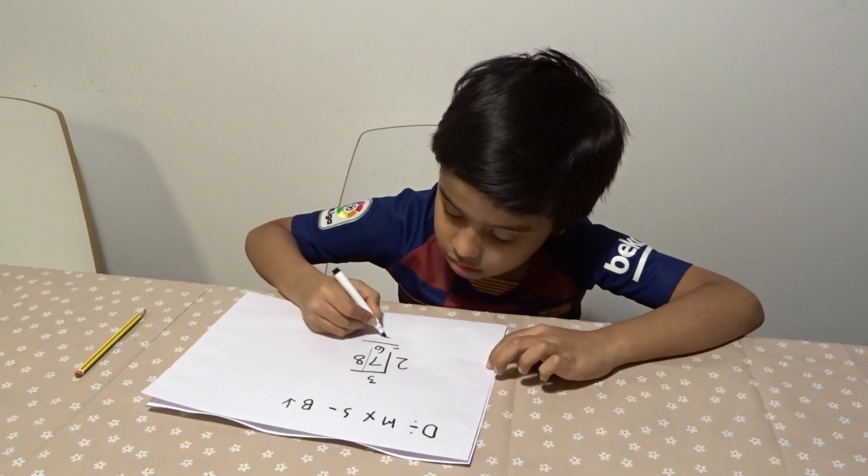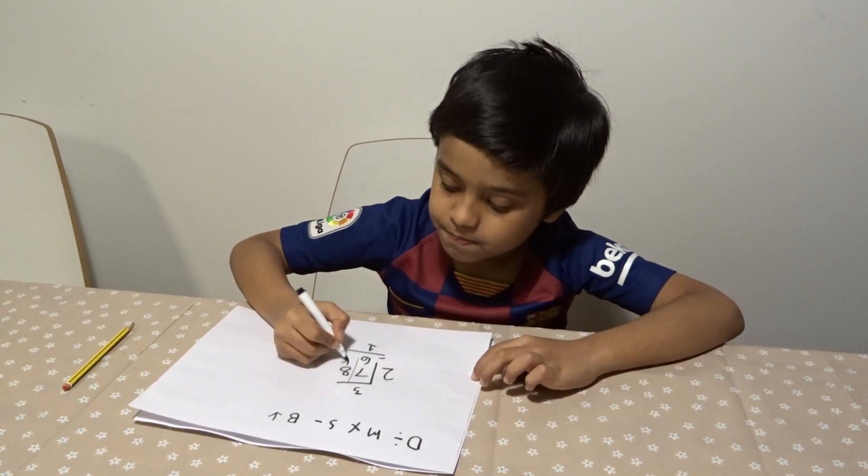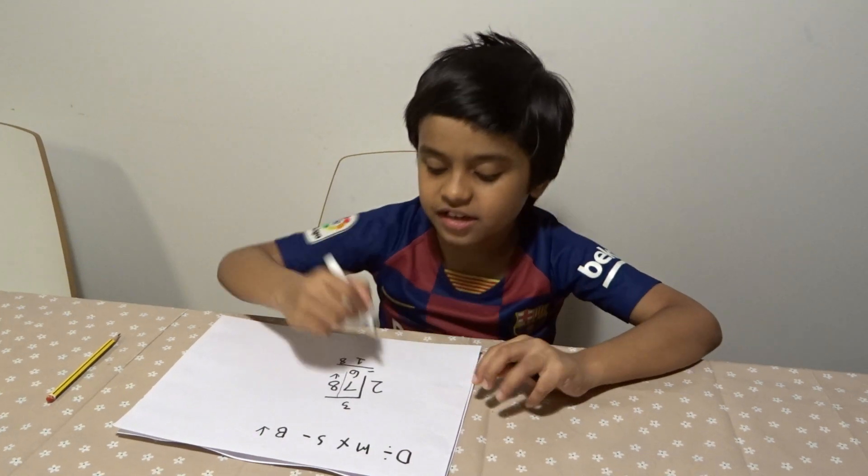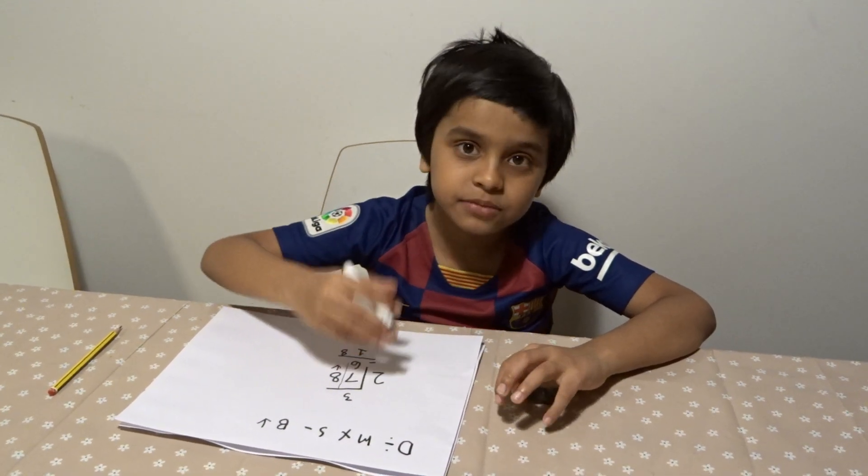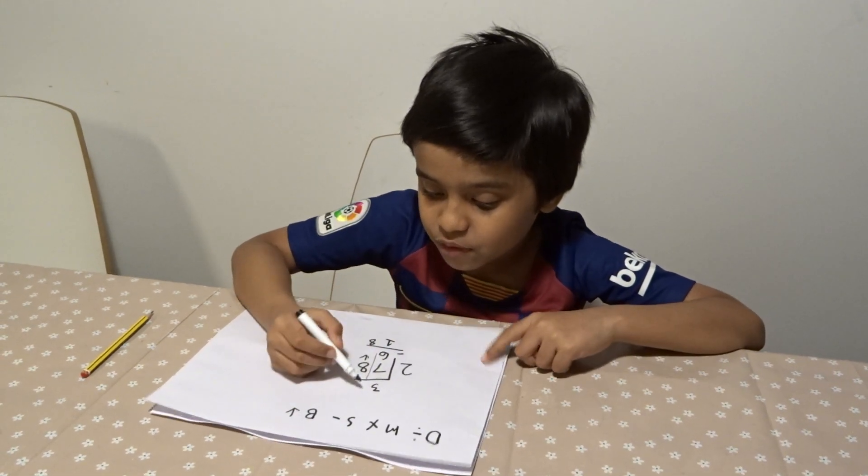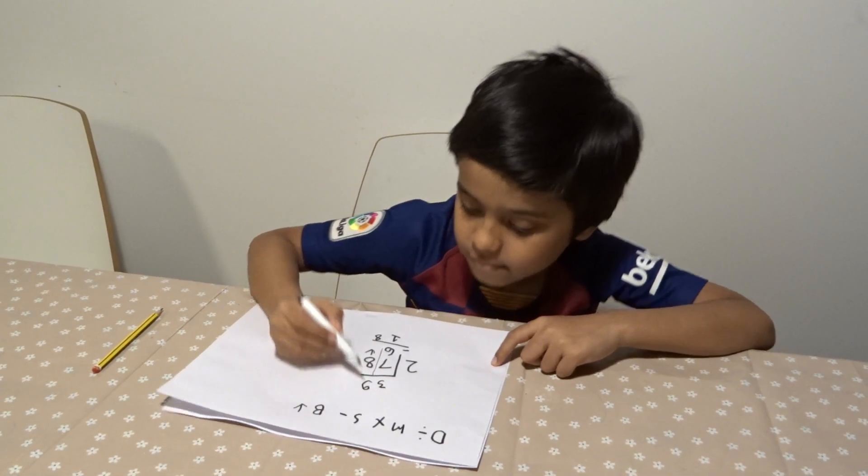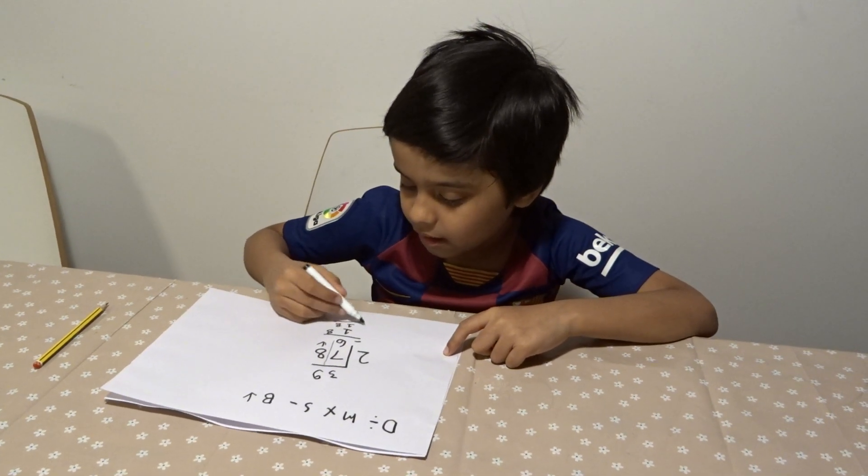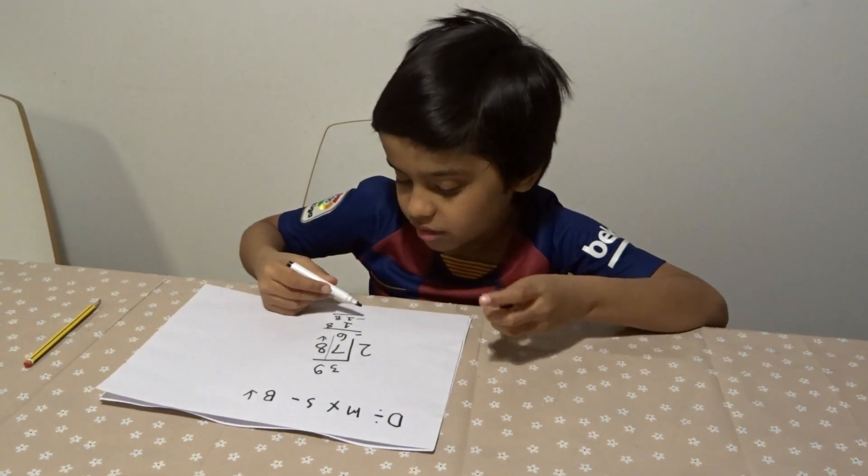Bring down the eight. Now two times nine is eighteen, so you put a nine.